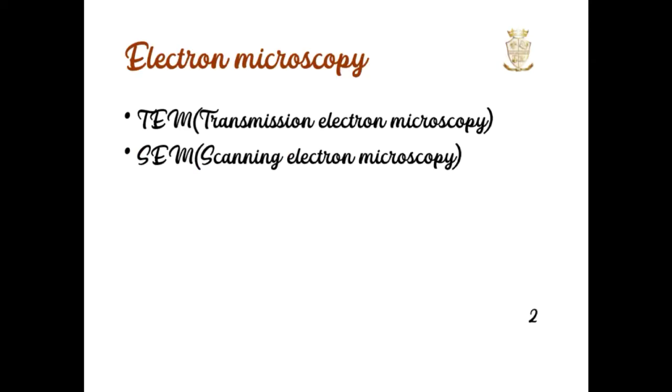Electron microscopy is classified into two: TEM and SEM. TEM means Transmission Electron Microscopy and SEM means Scanning Electron Microscopy. We are discussing about the scanning electron microscopy.